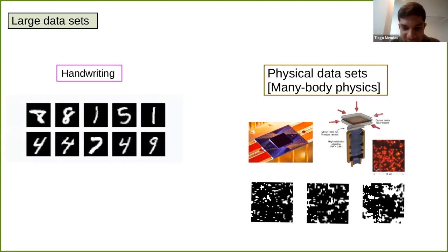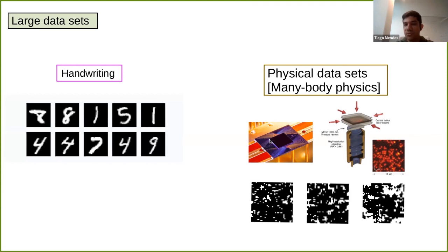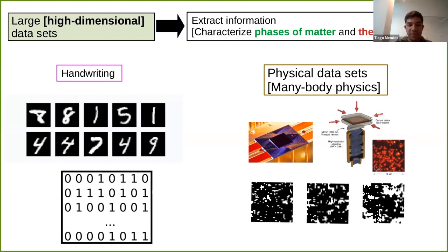The main motivation is that in many-body physics we have large datasets, just as in daily life. Here is an example of a handwritten dataset. In many-body physics there are examples like quantum computing and quantum simulators — these quantum machines generate large datasets. Also in simulation, like Monte Carlo simulations, you can think of that set of pictures as a large dataset: a table where each row is a picture representing the bits of that picture.